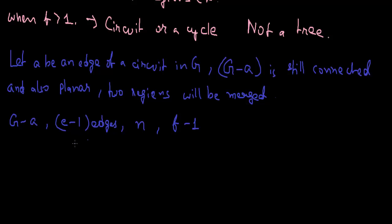So we can see that our result will be true. F minus 1 in place of F, this is E minus 1 minus n plus 2, this is our original formula. This will evaluate to e minus n plus 2, so our result is true. We have derived this formula.